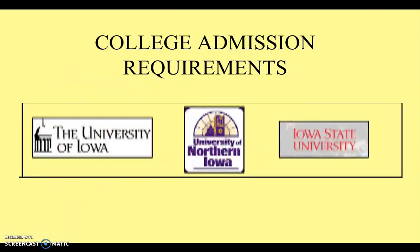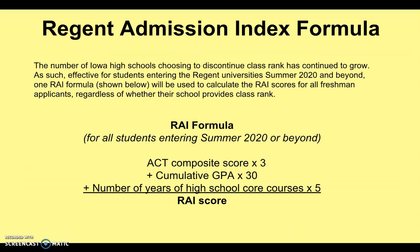College admissions requirements — there are different requirements at different schools. One of the things we like to pay attention to is the Regent Admission Index formula. This is a formula that the state of Iowa uses, and more specifically it's for UNI, University of Iowa, and Iowa State. It is a number that students can earn, and if they score higher than 245 in this formula, they automatically earn entrance into those state schools.